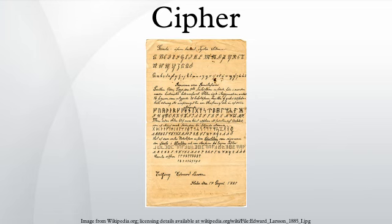Versus Codes: In non-technical usage, a code typically means a cipher. Within technical discussions, however, the words code and cipher refer to two different concepts. Codes work at the level of meaning — that is, words or phrases are converted into something else and this chunking generally shortens the message. An example of this is the telegraph code, which was used to shorten long telegraph messages resulting from entering into commercial contracts using exchanges of telegrams. Ciphers, on the other hand, work at a lower level — the level of individual letters, small groups of letters, or in modern schemes, individual bits and blocks of bits.